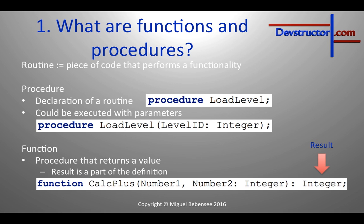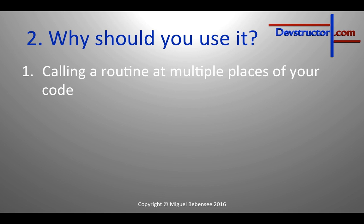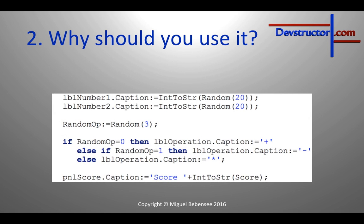That integer is the result type. You may ask yourself why you should use functions and procedures, and the answer is that it's actually really important and necessary. For instance, if you're calling a routine at multiple places in your code — let's take a look at our last video. We had this routine which generated a random formula: we generated the first random number and the second random number.